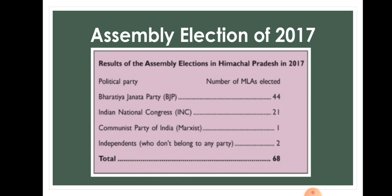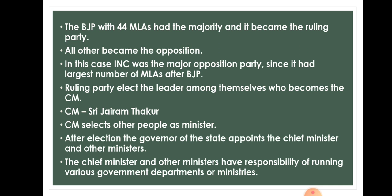Here is an example of the assembly election of 2017 in Himachal Pradesh. Members from various parties contested: Bharatiya Janata Party won 44 seats, Indian National Congress won 21, Communist Party of India won 1, and Independents won 2 — making a total of 68 seats from different constituencies. The BJP with 44 MLAs had the majority and became the ruling party; all others became the opposition.